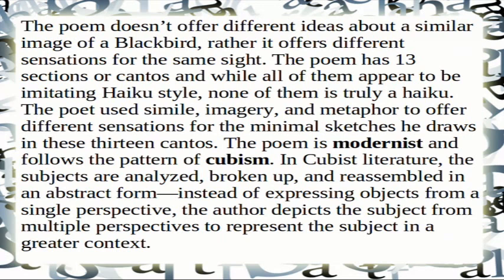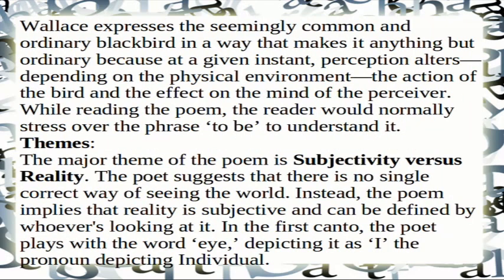The poem is modernist and follows the pattern of cubism. In cubist literature, subjects are analyzed, broken up, and reassembled in an abstract form. Instead of expressing objects from a single perspective, the author depicts the subject from multiple perspectives to represent the subject in a greater context. Wallace expresses the seemingly common and ordinary blackbird in a way that makes it anything but ordinary, because at a given instant perception alters depending on the physical environment, the action of the bird, and the effect on the mind of the perceiver.